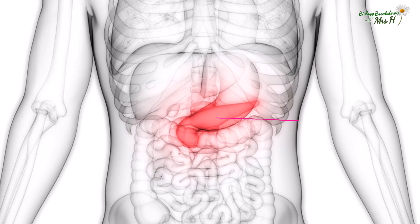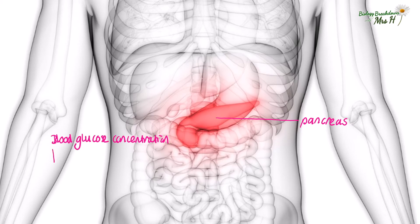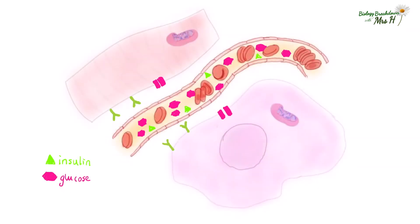The organ that detects if blood glucose concentration is too high or low is the pancreas. We know the pancreas is also important in making digestive enzymes, but we're going to concentrate on its function as an endocrine gland secreting hormones. If the blood glucose concentration is too high, this will be detected by the pancreas and it will secrete insulin into the blood. If the blood glucose is too low, the pancreas will secrete glucagon into the blood.